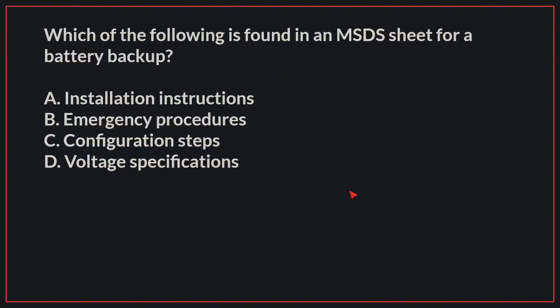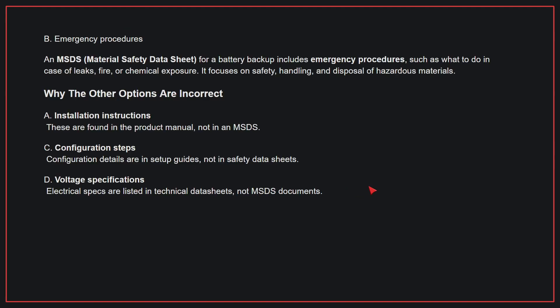Which of the following is found in an MSDS sheet for a battery backup? The correct answer is B, emergency procedures. An MSDS for a battery backup includes emergency procedures such as what to do in case of leaks, fire, or chemical exposure. It focuses on safety, handling, and disposal of hazardous materials.